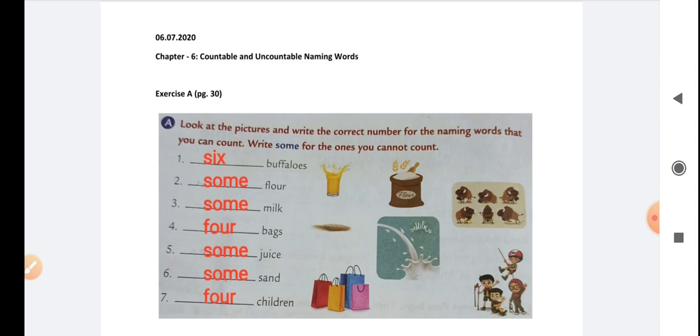As the name says, countable means which can be counted in numbers like 1, 2, 3, 4, and uncountable means which cannot be counted. We can only express them in quantity like some, few, little, like that.